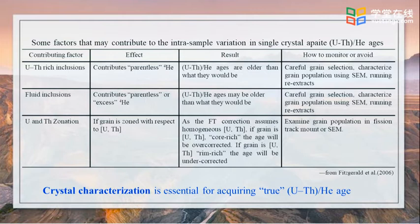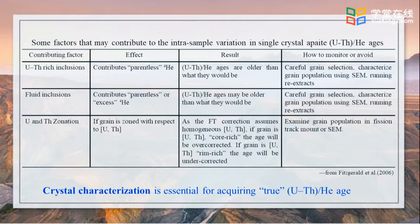Uranium and thorium zonation of a grain will affect dating data, because homogeneous uranium and thorium concentration is usually assumed. The uniform distribution will give an intermediate age. However, rim-rich will give the youngest age, and core-rich will give the oldest age. Overall, these effects substantially restrict what kind of crystals can be analyzed. Crystal characterization is therefore essential for obtaining true uranium-thorium-helium ages from samples.